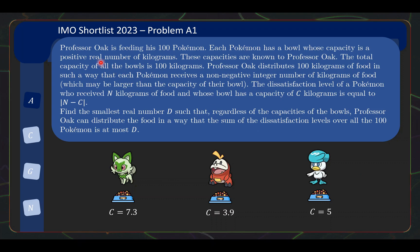The problem statement is as follows. Professor Oak is feeding his 100 Pokémons. Each Pokémon has a bowl whose capacity is a positive real number of kilograms. These capacities are known to Professor Oak. The total capacity of all the bowls is 100 kilograms. Professor Oak needs to distribute 100 kilograms of food such that each Pokémon receives a non-negative integer number of kilograms of food. This amount may be larger than the capacity of their bowl. The amount given must be an integer.